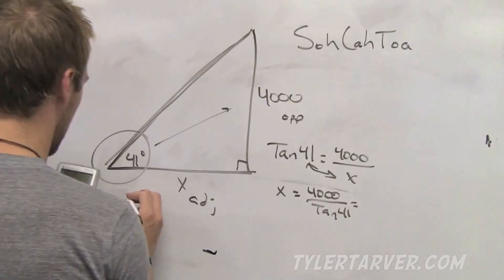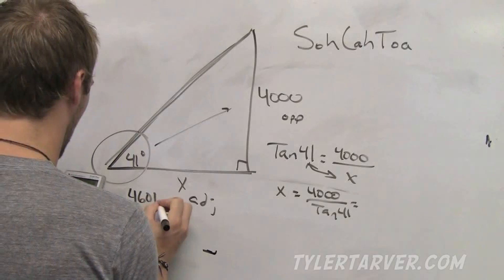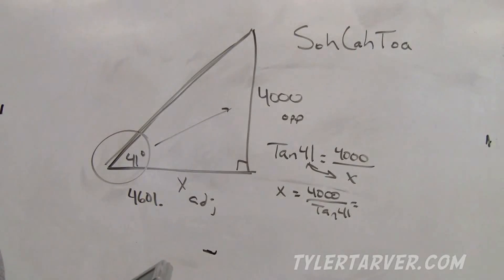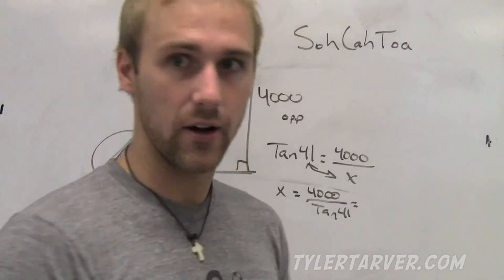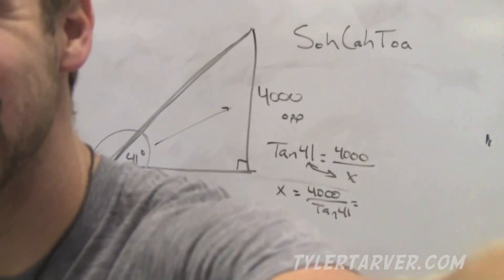It is 4,601 point, and they said round to the nearest foot, and it was .4, so I'm done. Got my answer. And just like that, ladies and jelly beans, boys and squirrels, we are done.